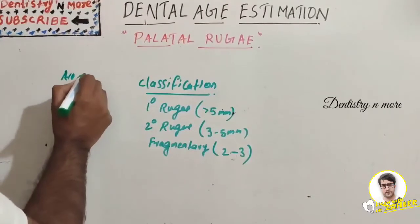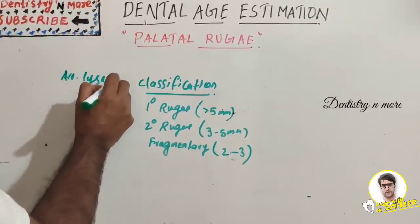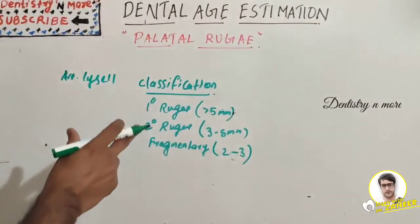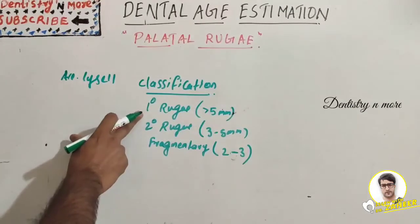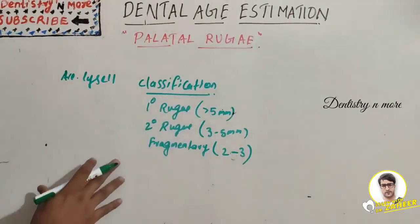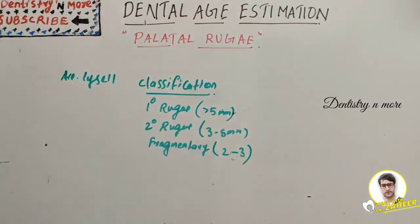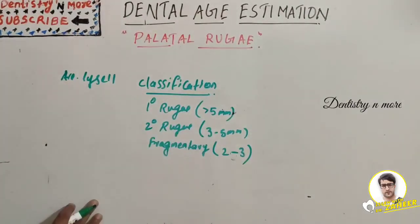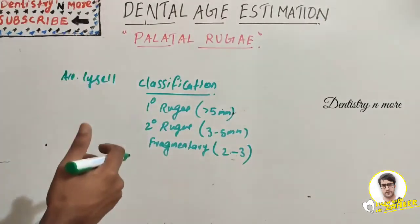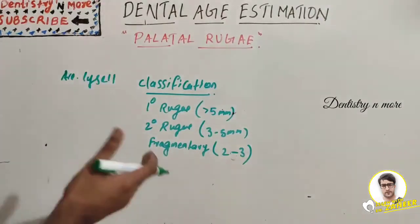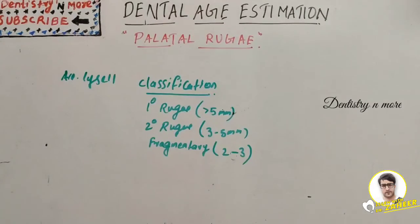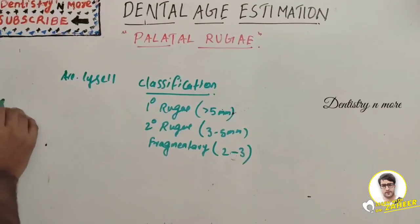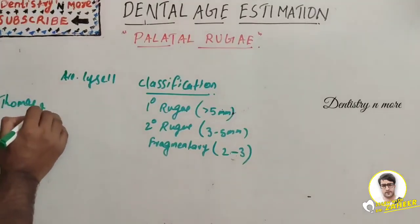We can classify palatal rugae according to Licht. He classified them as: primary rugae — more than 5 mm; secondary rugae — 3 to 5 mm; fragmentary rugae — 2 to 3 mm; and rugae less than 2 mm, which are not taken into consideration.